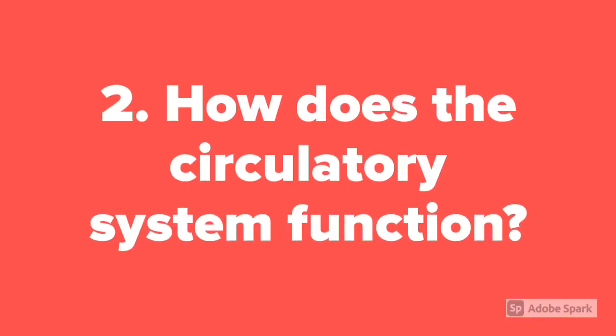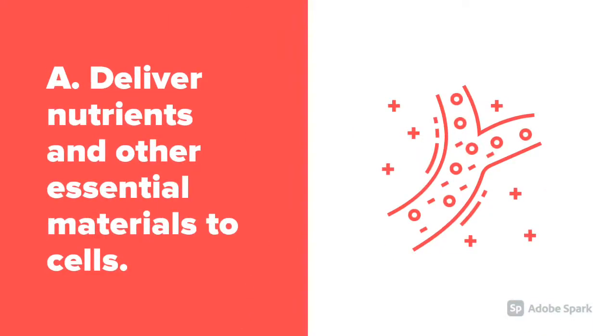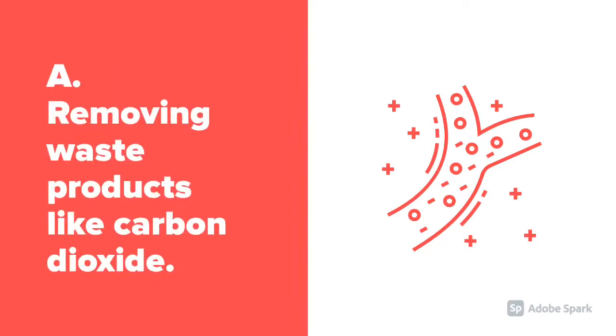Question 2. How does a circulatory system function? They deliver nutrients and other essential materials to cells. They also remove waste products like carbon dioxide from the body.